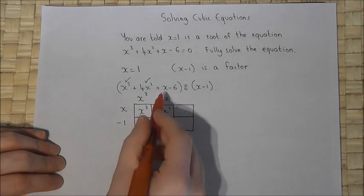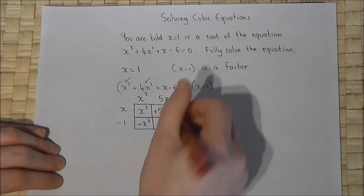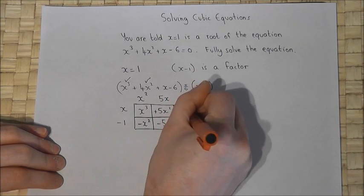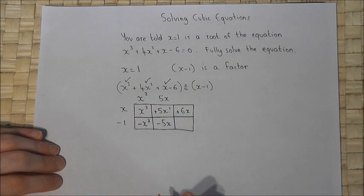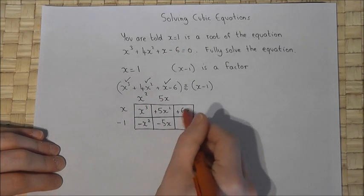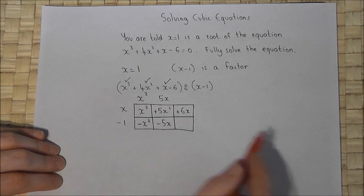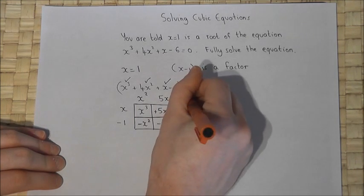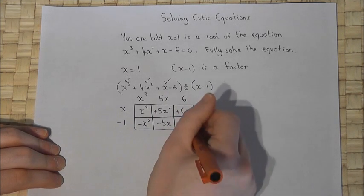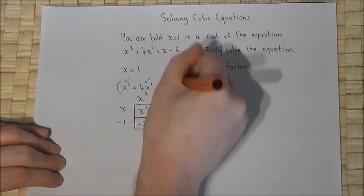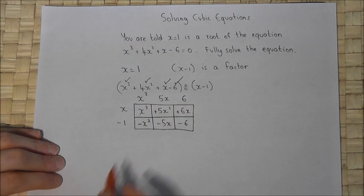But I want an x. So if I plus a 6x, minus 5x plus 6x is an x. So this diagonal gives me the required x. There's an x, so x times 6 is 6x. There's a minus 1. Minus 1 times 6 is minus 6. Spot on.